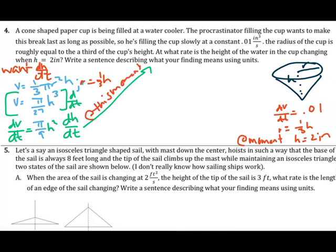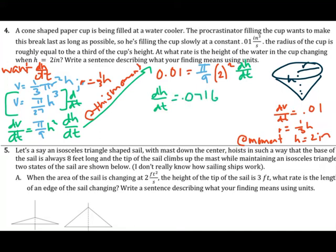Substituting the known values at this moment — dV/dt equals 0.01 and h equals 2 — we solve for dh/dt, which gives 0.0716 inches per second. The rate of change of the height of water at this moment is 0.0716 inches per second.